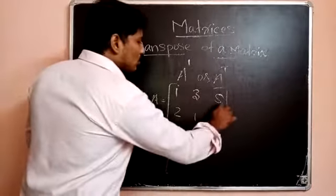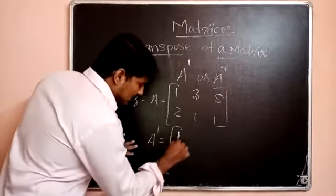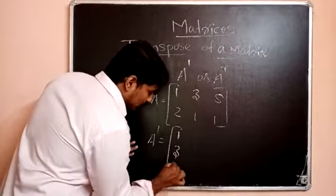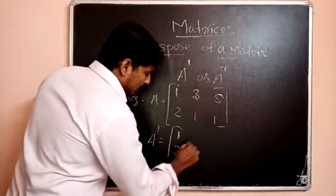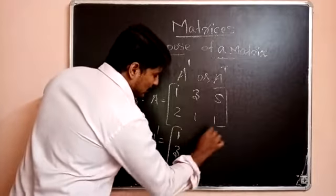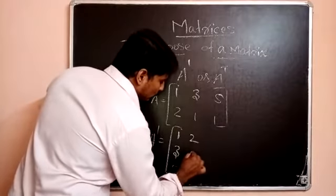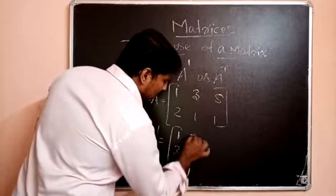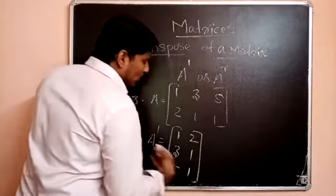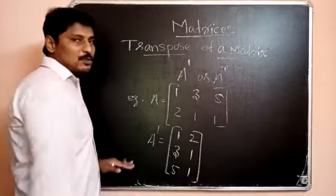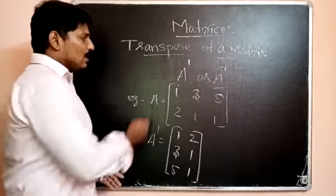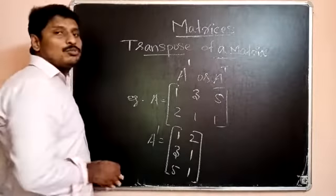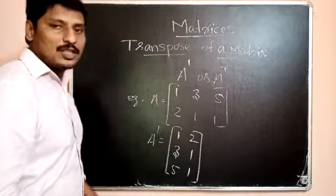To find A transpose, we interchange rows and columns. The first row becomes the first column. The second row — 2, 1, 1 — becomes the second column. So the rows and columns are interchanged to obtain the transpose of the matrix.